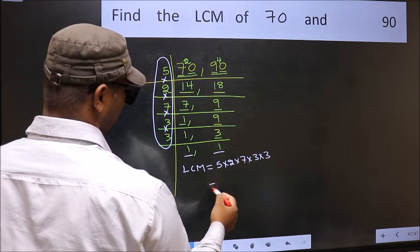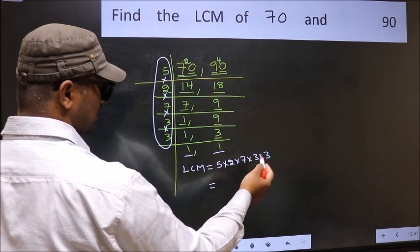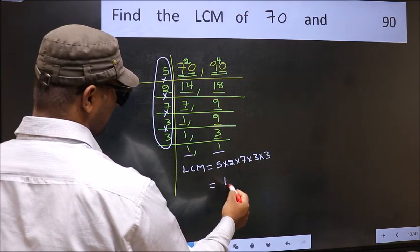When we multiply these numbers, we get 630 as our LCM.